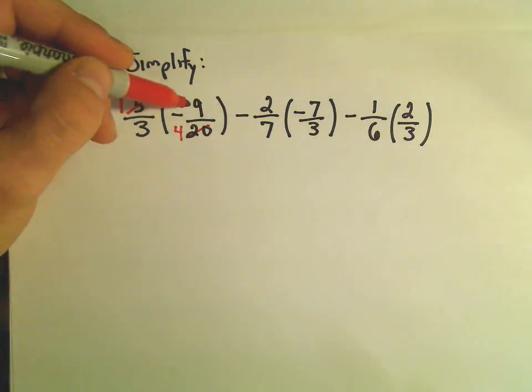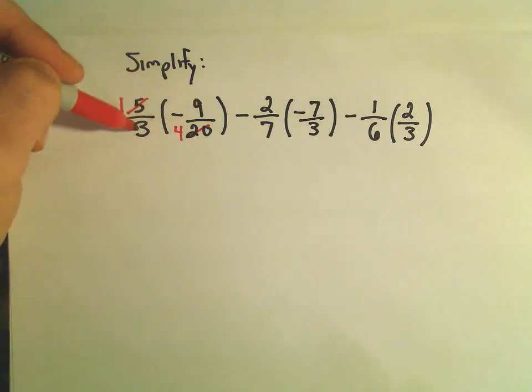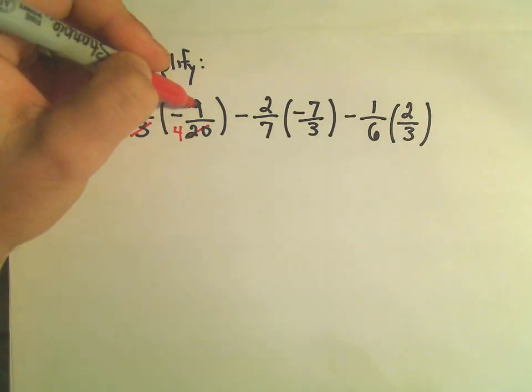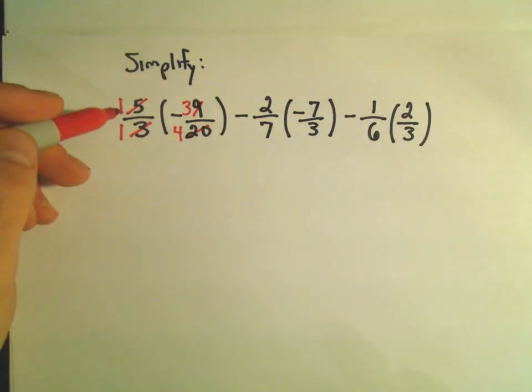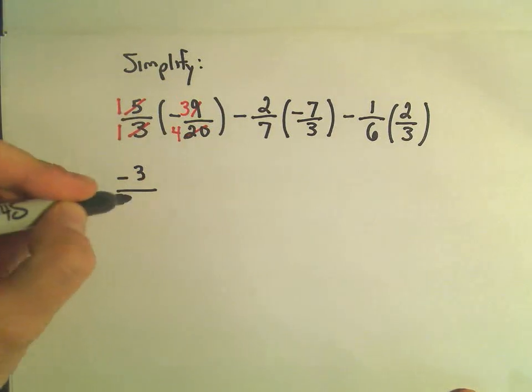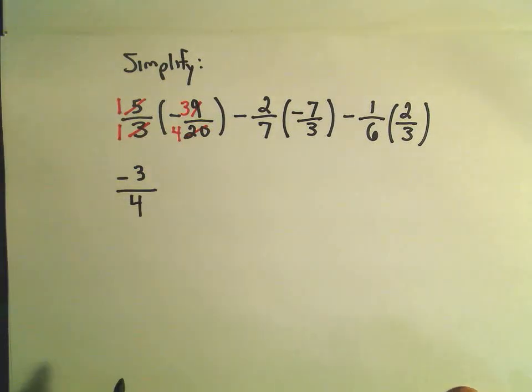Likewise, we can cancel the 9 and the 3. So 3 will go into 3 one time, and 3 will go into 9 three times. So really to me we have 1 times negative 3 in the numerator, which is just negative 3, and then in the denominator we have 1 times 4, which is simply going to leave us with a 4.